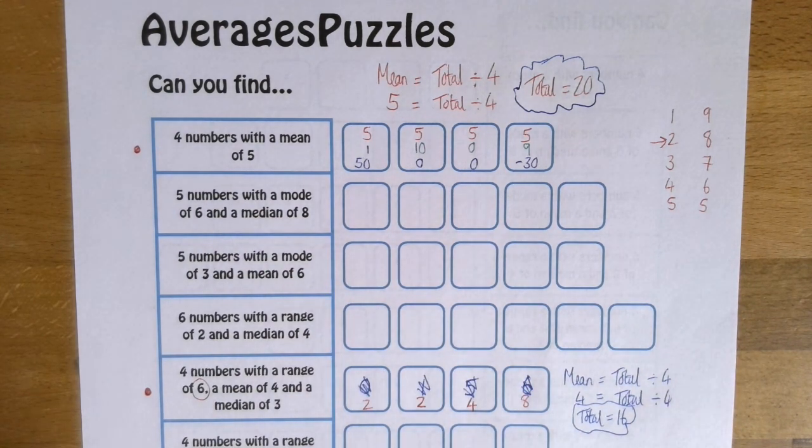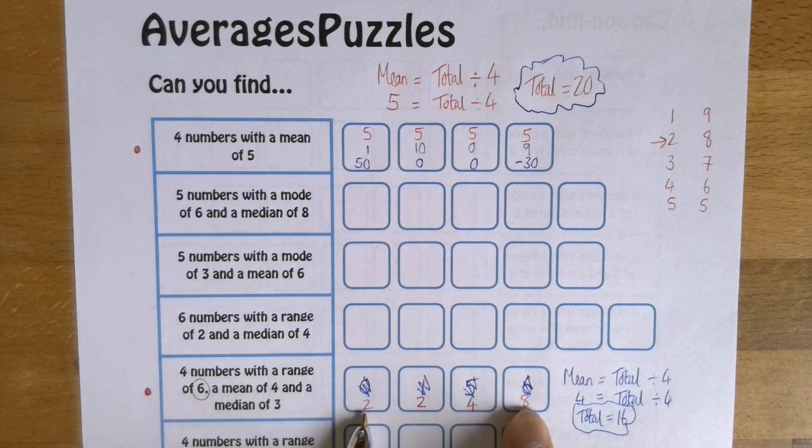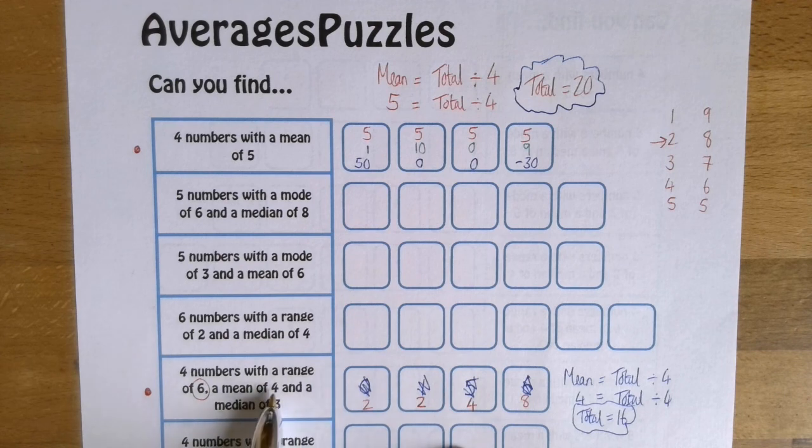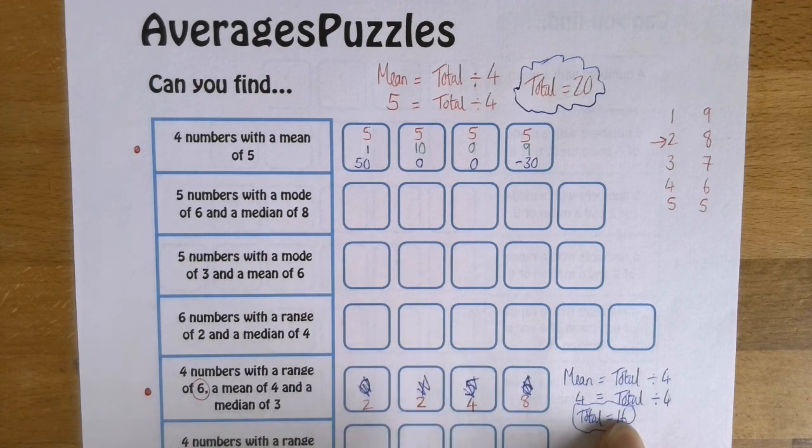Let's just double check. So I've got a range of six because the biggest take away the smallest, eight take away two is six. I've got a median of three because halfway between two and four is three. And the mean is four because if I add these numbers up, I get 16 and 16 divided by four, four because there are four numbers, gives me four.